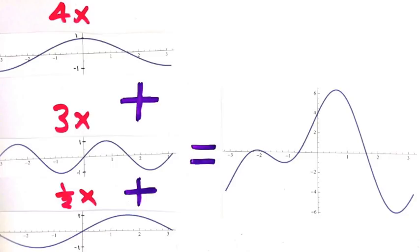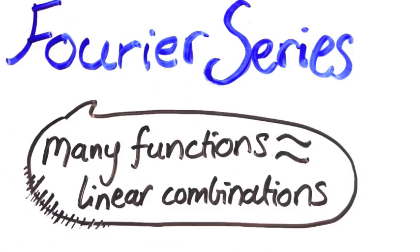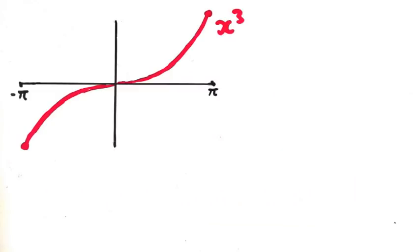The amazing result, known as the Fourier series, says that actually you can make a lot of different functions this way. Let's see an example to see how this works. Let's use the function x cubed. On the interval negative pi to pi, x cubed looks like this.